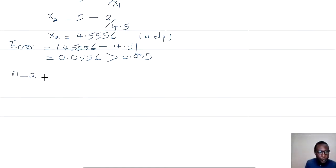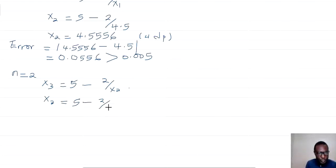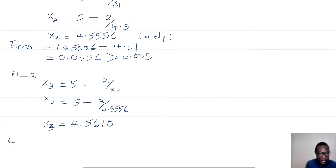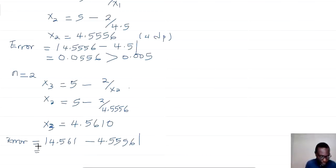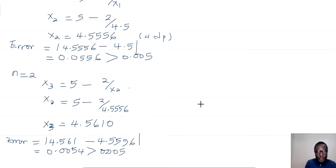For n = 2: x₃ = 5 − 2/x₂ = 5 − 2/4.5556 = 4.5610. The error is |4.5610 − 4.5556| = 0.0054, which is still greater than 0.005, so we must continue.